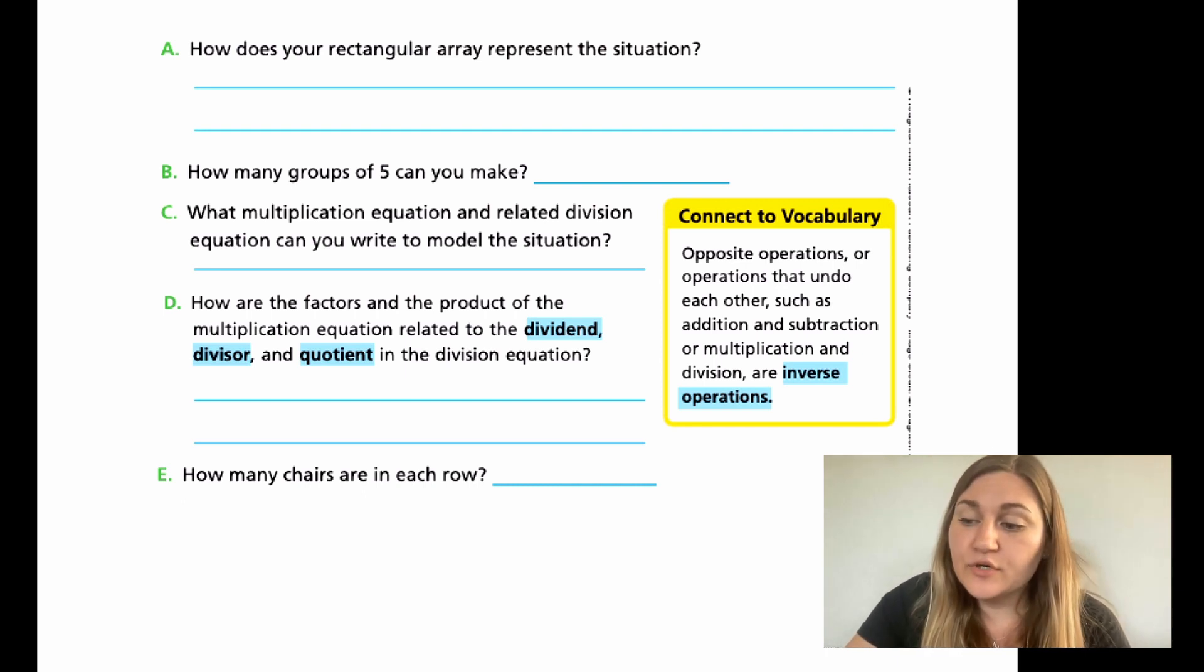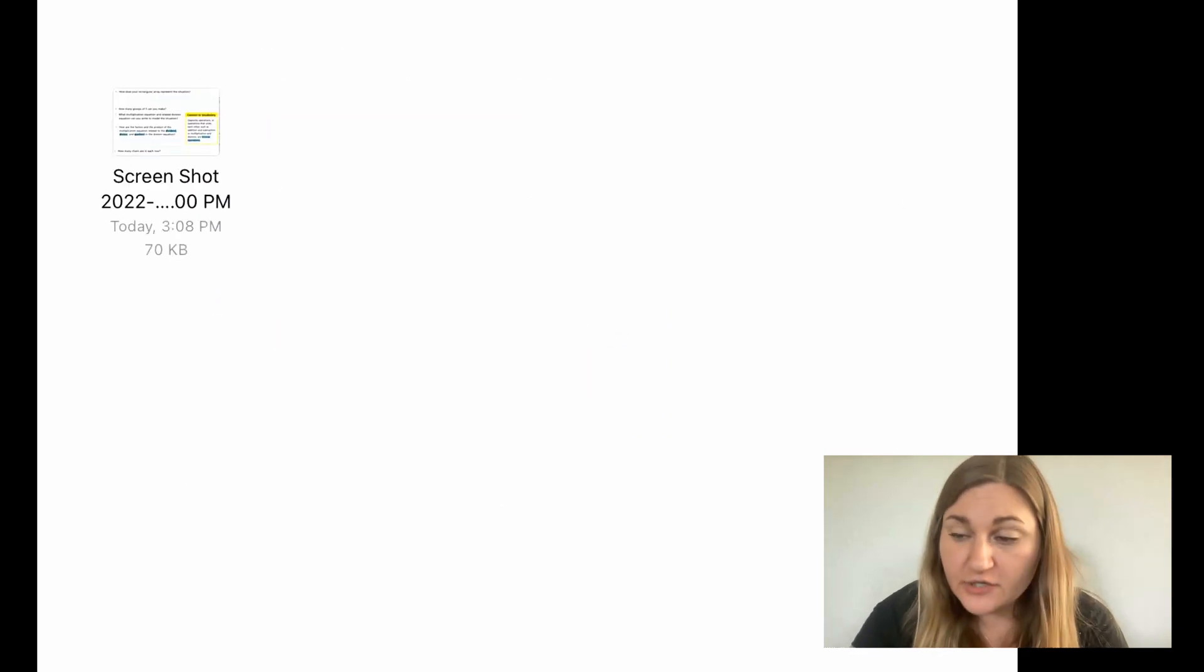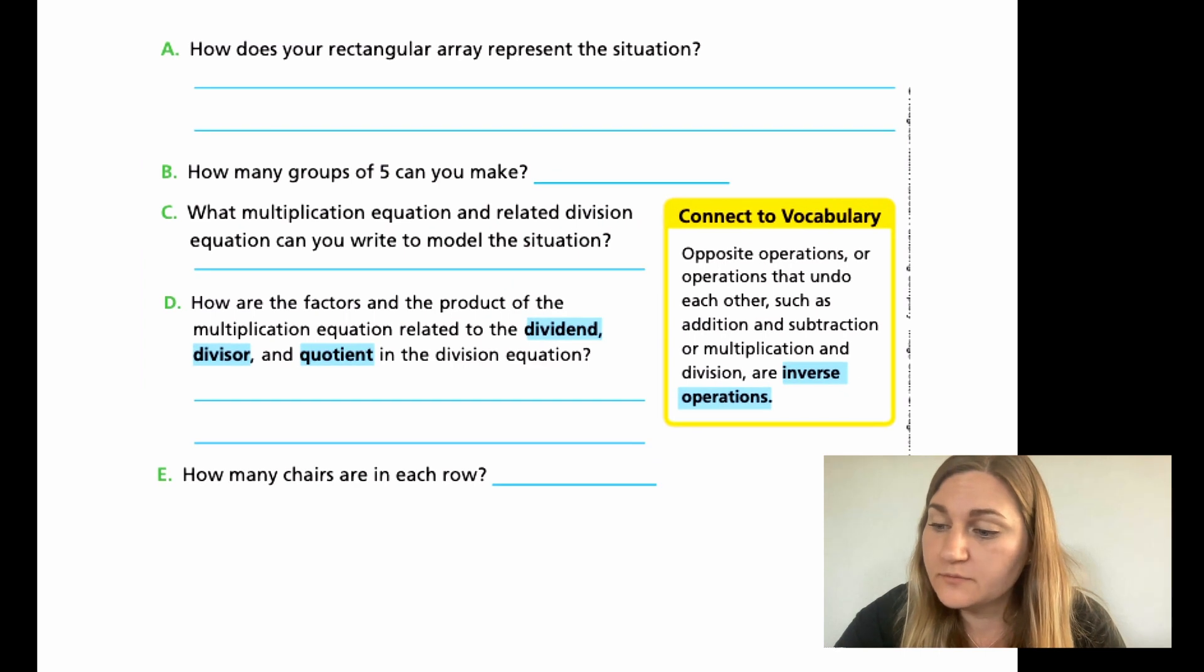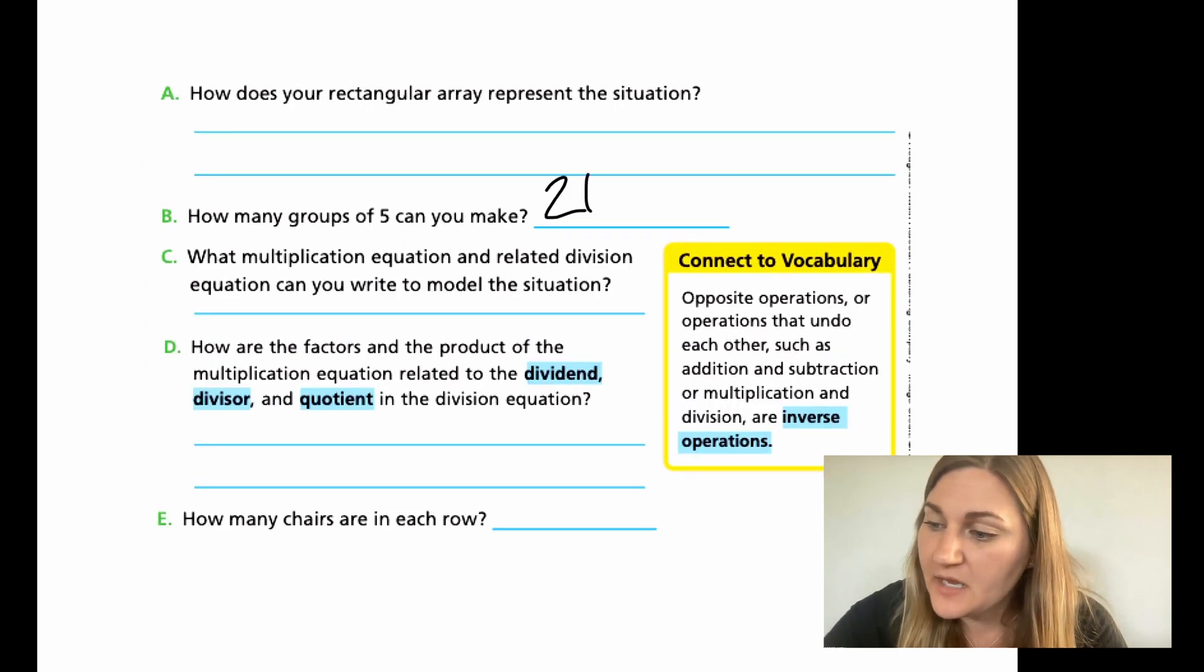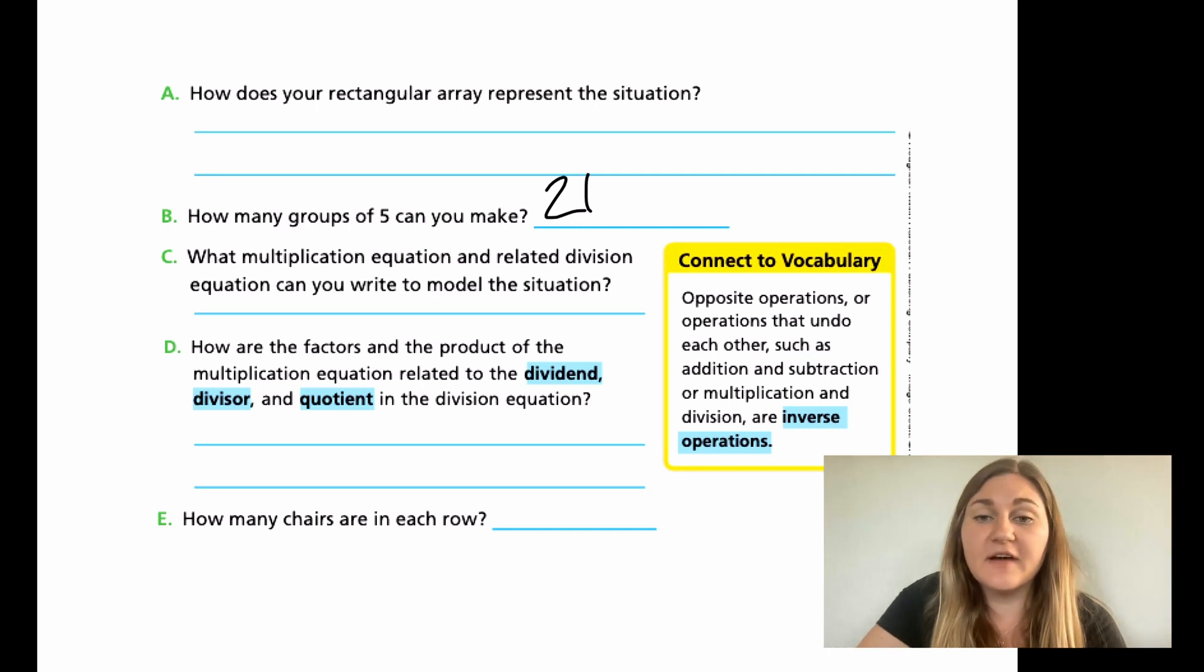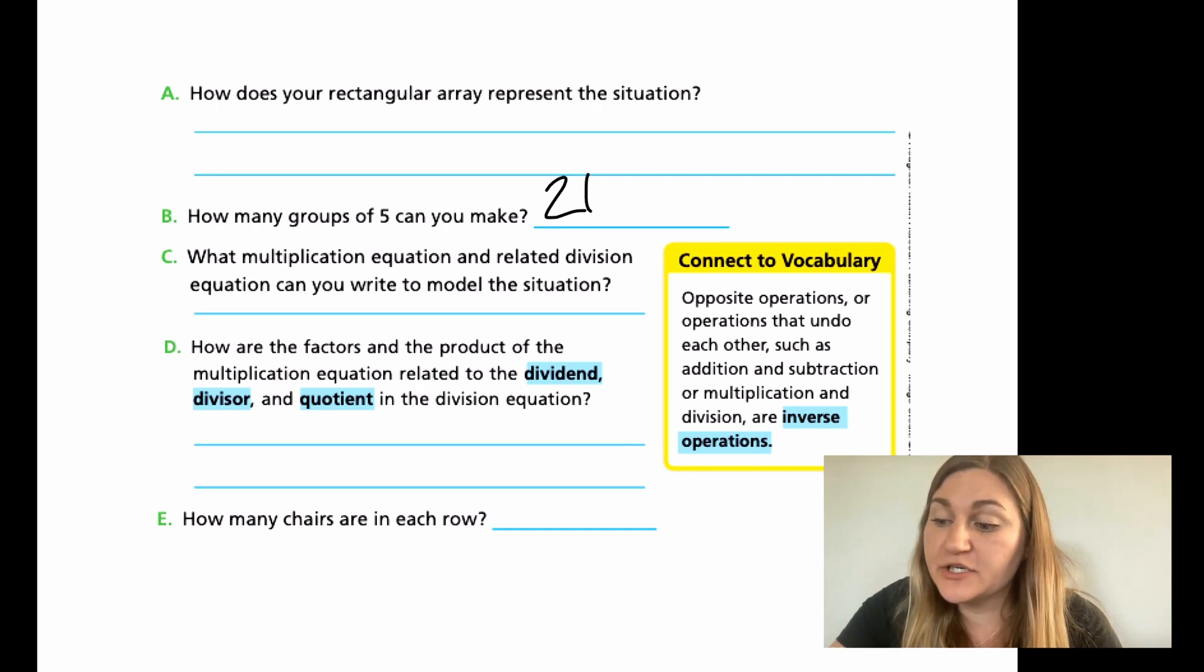So A, how does your rectangular array represent the situation? Well, you can write something along the lines of, I drew my picture to match the problem. I have 21 dots in each row representing the 21 chairs in each row, something along those lines. How many groups of five did you make? So five rows, how many groups of five? We had 21 chairs in each row. So I made 21 groups of five on each.